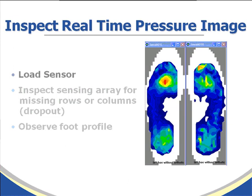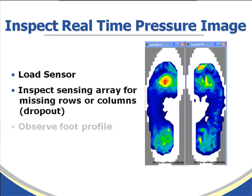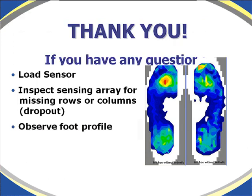To inspect the pressure, look at the loaded pressure cells and make sure you don't have any missing rows or columns — this is called dropout. If you do have a missing row or column, you probably want to get rid of the sensor and get a new one. You also want to observe the foot profile and see all the landmarks of the feet to make sure everything is being covered.